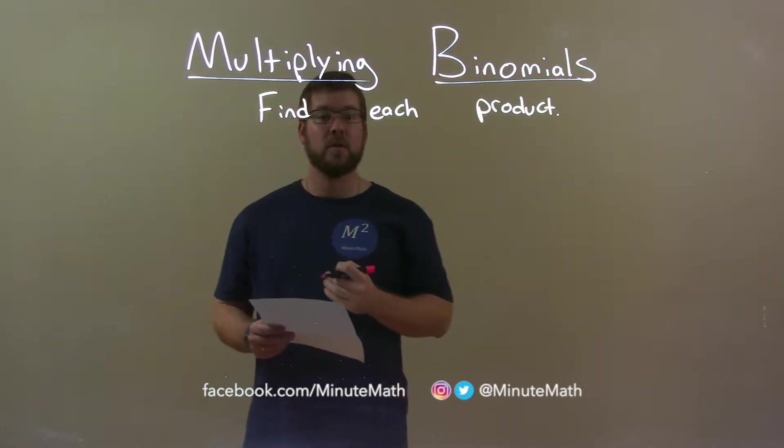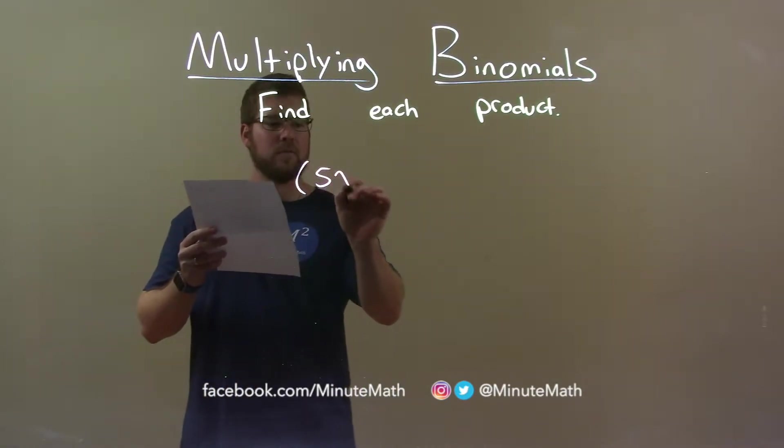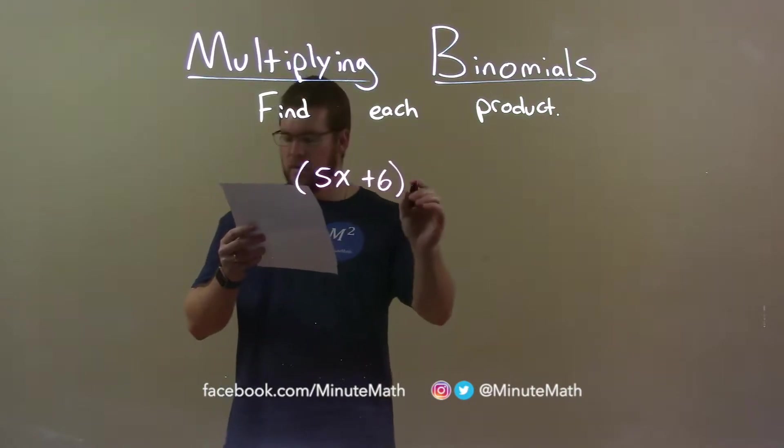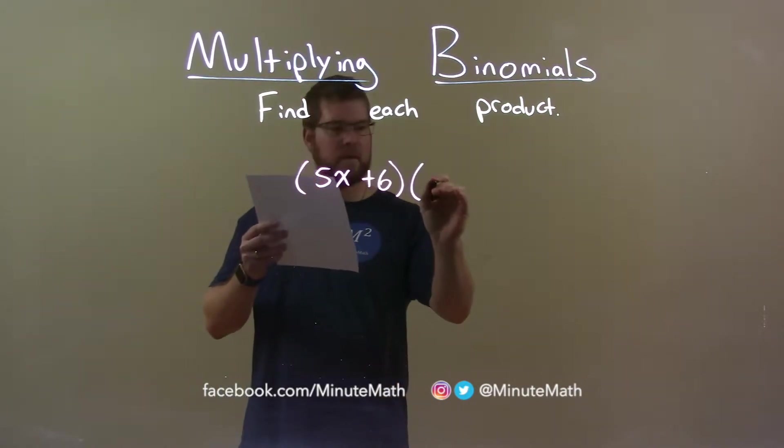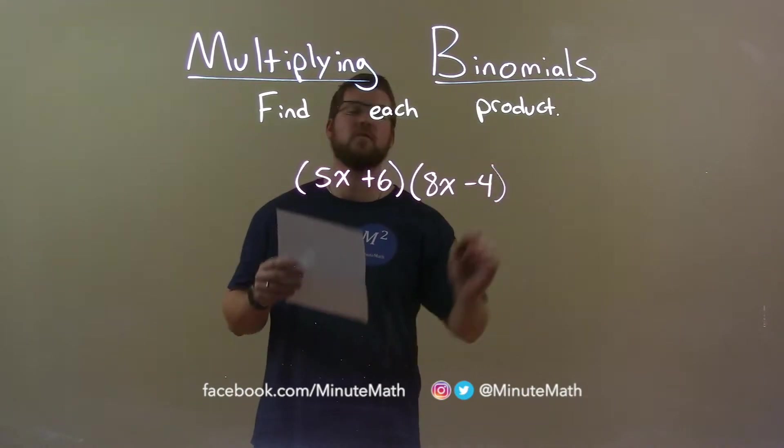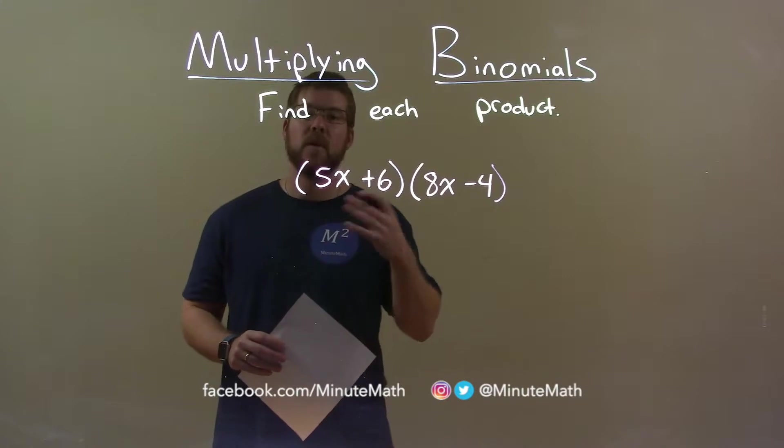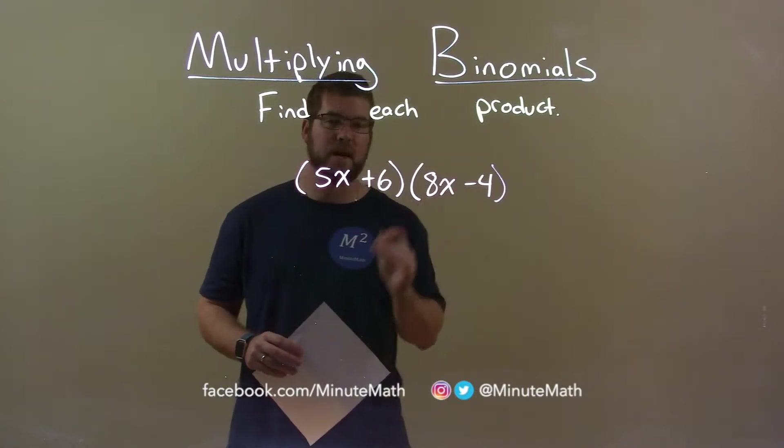So, if I was given this product, 5x plus 6 multiplied by 8x minus 4, we want to take all parts of our first parenthesis and multiply it by all parts of our second parenthesis.